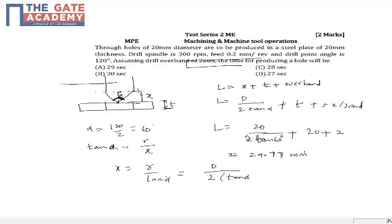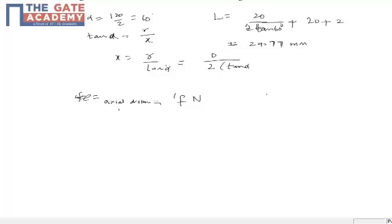Now what is feed? Feed is the actual distance which it moves per revolution. So actual distance moved per revolution, but n is revolutions per minute. So when I multiply these two, basically I will be getting the actual distance moved per second. So this is feed times n is actual distance moved per second.